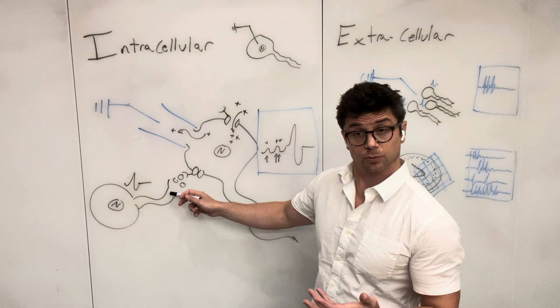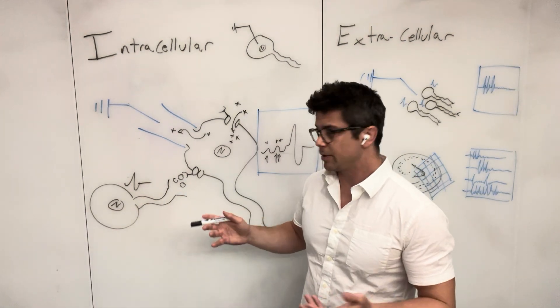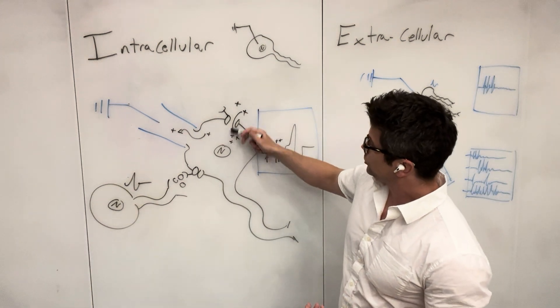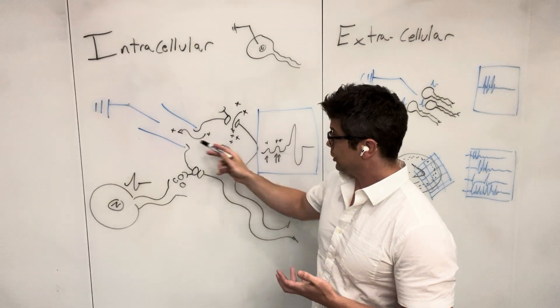By that I mean other neurons are going to be synapsing on that neuron. And when they fire an action potential, they'll release their neurotransmitter, which binds to the receptors on the neuronal membrane, which will let charge in or out of the cell. And you'll detect that.